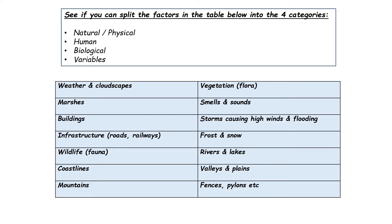Here is an activity to have a go at. Within the table with the blue background there are all sorts of features we might find within a landscape, such as the weather, buildings, or marshes. Marshes is wet ground that you'd wear wellies to walk across. See if you can split these things up into natural, human, biological, and variables. If you want, pause the video — I'll be going through the answers next.